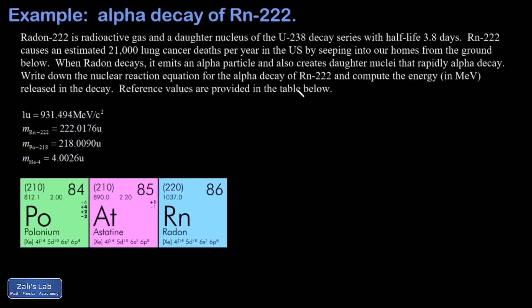In this video we're looking at the alpha decay of radon-222. Radon is a daughter nucleus of the uranium-238 decay series. There are trace amounts of uranium-238 in rock and soil, and those decays constantly produce trace amounts of radon-222.